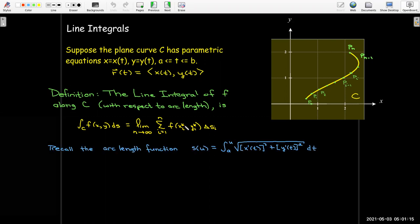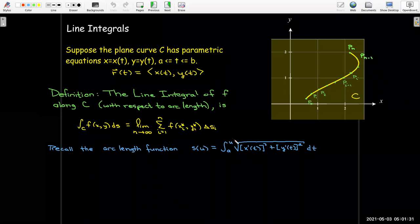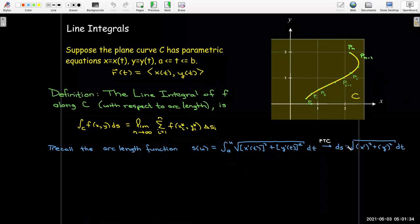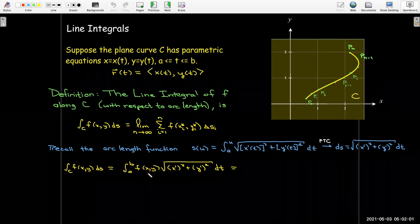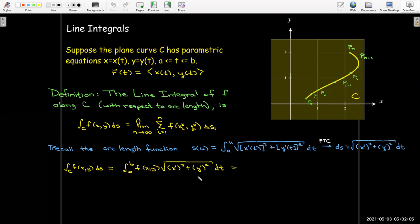Now, how are we going to evaluate this? If we remember our arc length function, we start at a fixed value a, and then go to a variable upper bound u. The differential ds is related to our parameter dt through this equation: ds = √(x'^2 + y'^2) dt. To evaluate this integral, I'll write everything in terms of t. I'll replace x with its corresponding parametric equation, same thing for y, and ds gets replaced by this expression for dt.